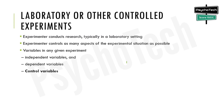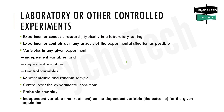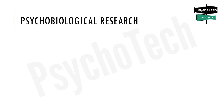In implementing the information processing experimental method, the experimenter must use a representative and random sample of the population of interest and must exert rigorous control over the experimental conditions. If these requisites are fulfilled, the experimenter may be able to infer probable causality — the influence of the independent variable (the treatment) on the dependent variable (the outcome) for the given population.